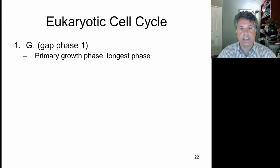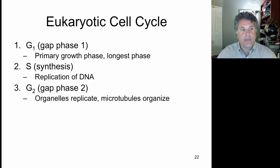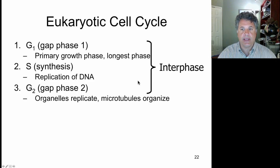Where we left off was introducing the eukaryotic cell cycle and pointing out that it is divided into several phases, three of which are lumped together into a grouping we call interphase. This includes a gap in which the primary growth phase of the cell occurs, usually the longest phase of the cell cycle, the S phase in which replication of DNA takes place, S stands for synthesis.